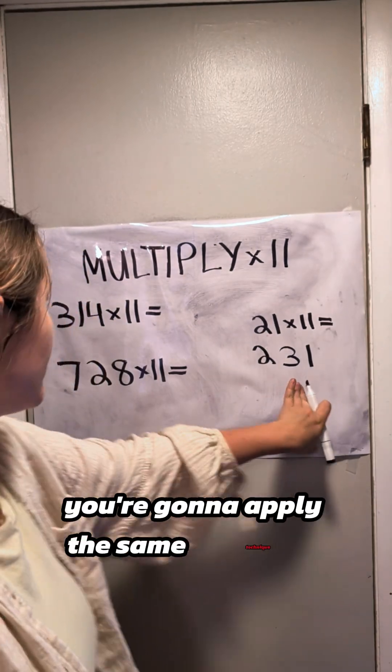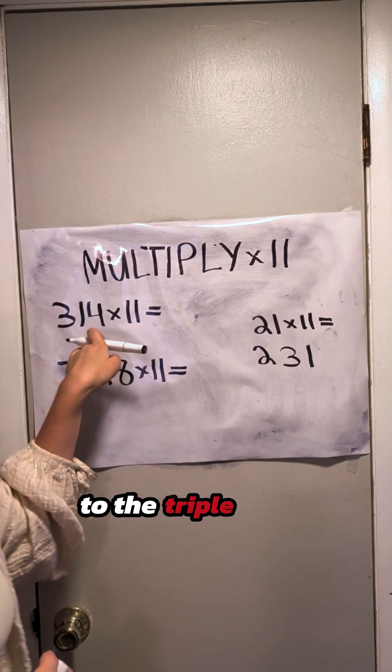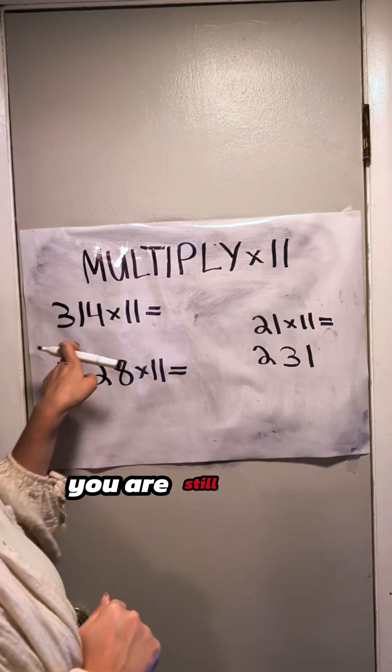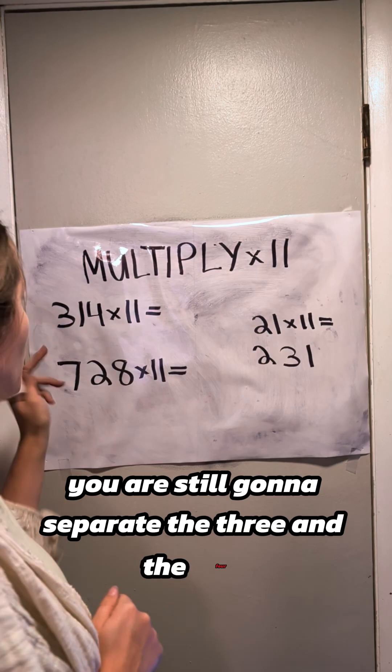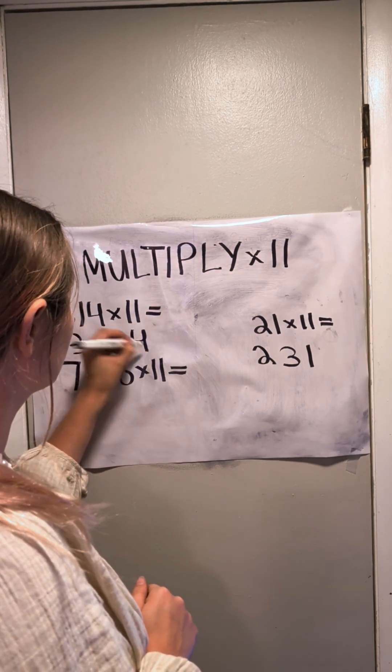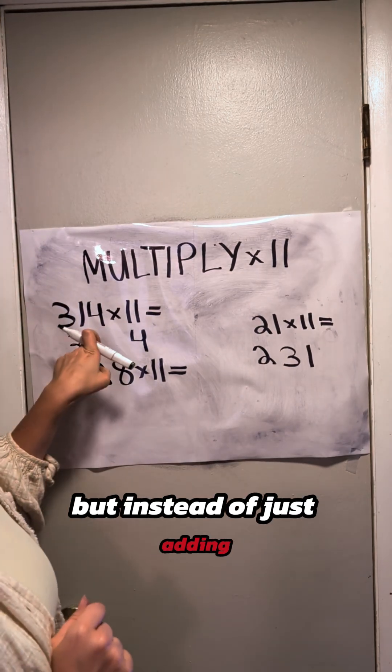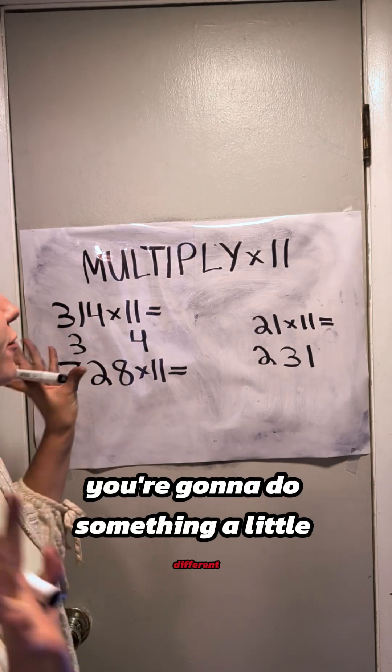You're going to apply this same technique to the triple-digit numbers, but it's going to look a little different. Okay, you are still going to separate the 3 and the 4, but instead of just adding all of these numbers together, you're going to do something a little different.